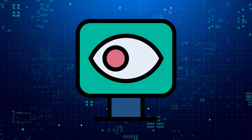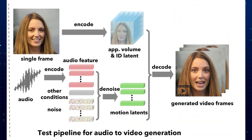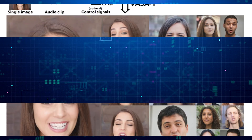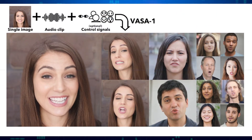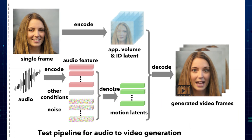That might sound complicated, but don't worry — we'll break it down together. VESA takes two things: a single picture of a person's face and a recording of someone speaking. Using this information, VESA can create a hyper-realistic video of that person speaking, complete with perfectly synced lip movements, natural facial expressions, and even subtle head movements.